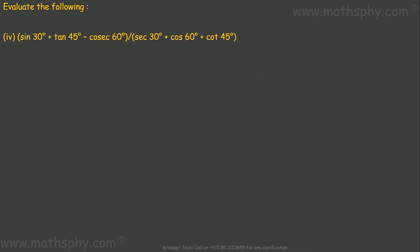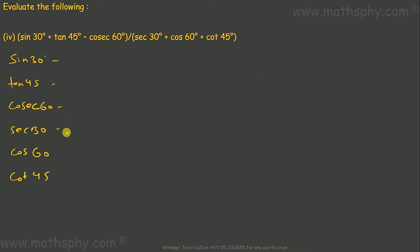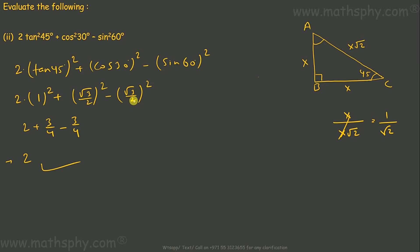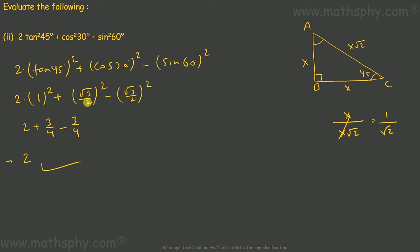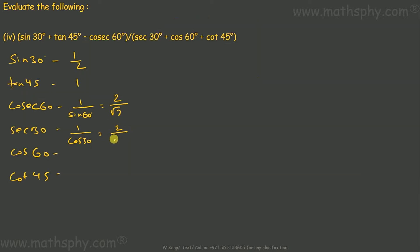For this equation, let's find the values of all terms individually. Sin 30 is 1 over 2. Tan 45 is 1. Cosec 60 is 1 over sin 60; sin 60 is root 3 over 2, so cosec 60 is 2 over root 3. Sec 30 is 1 over cos 30; cos 30 is root 3 over 2, so sec 30 is 2 over root 3. Cos 60 is 1 over 2. Cos 45 is 1 over root 2.